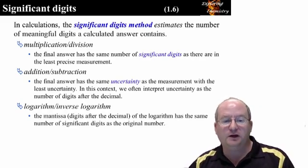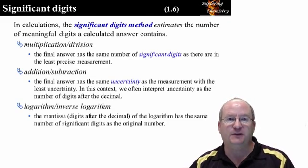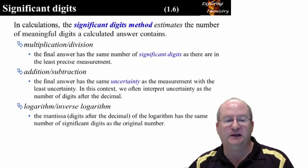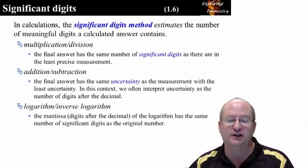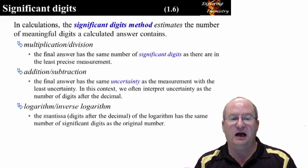In order to propagate significant digits through calculations, the simplest method is the significant digits method. This method estimates the number of meaningful digits that are in a calculated answer. You should be familiar with the rules for multiplication and division and for addition and subtraction. We will cover the rules for logarithms when we need to apply them.